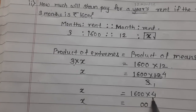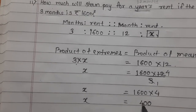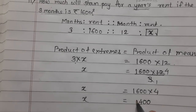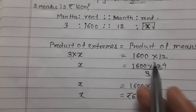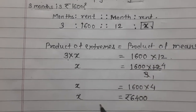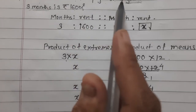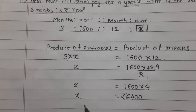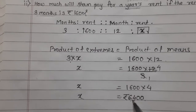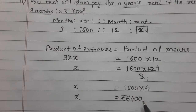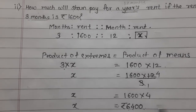So x = 1600 × 4. 4 zeros are 0, 4 zeros are 0, 4 sixes are 24, carry 2, 4 ones are 4 plus 2 is 6 — so x = 6400. Shyam will pay Rs. 6400 for a year, meaning for 12 months.